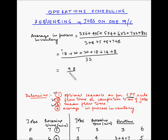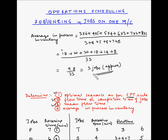So 98 divided by 33 equals approximately 3 jobs. On average, 3 jobs are in process — meaning they are either being processed or yet to be processed. This completes all four parts of the problem.